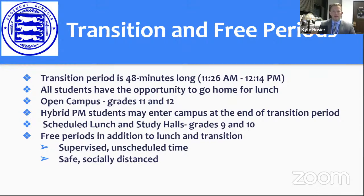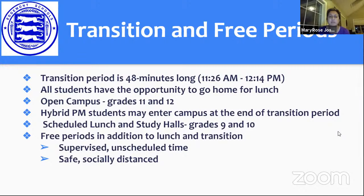Miss Joseph speaking: As we bring students back to campus full day, there are things very similar to the previous hybrid schedule besides the four added minutes of instructional time and the shorter transition period. All students will have the opportunity to go home for lunch. Grades 11 and 12 have an open campus. Grades 7 and 8 will have every period structured and supervised. Grades 9 and 10 will have some increased freedom with a varying decrease in supervision. During the transition period, hybrid PM students may enter campus from home at the end of the transition period.